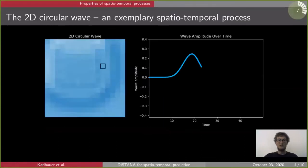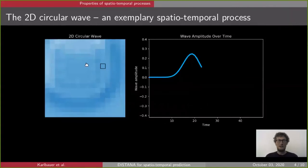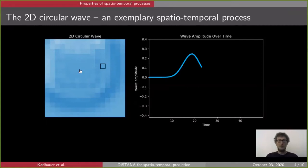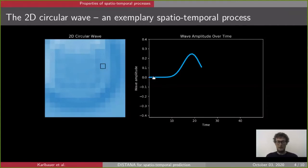Let's have a look at the properties of spatiotemporal processes by examining a two-dimensional circular wave — an exemplary spatiotemporal process we implemented. On the left you see the 2D wave propagation through space over time, activated at one particular position in the 2D field, from which a wave propagates circularly outward from that point source. On the right-hand plot you see the activity of a single pixel over time.